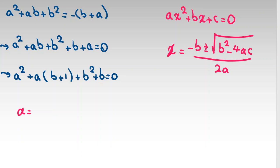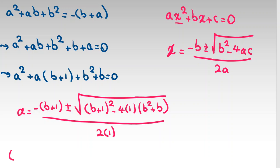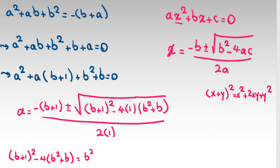Applying the formula here, A equals negative times B plus 1, plus or minus the square root of B plus 1 squared minus 4 times B squared plus B, all over 2. Expanding inside the square root: B squared plus 2B plus 1 minus 4B squared minus 4B gives the discriminant delta equals negative 3B squared minus 2B plus 1. For integer solutions, this discriminant must be a perfect square.